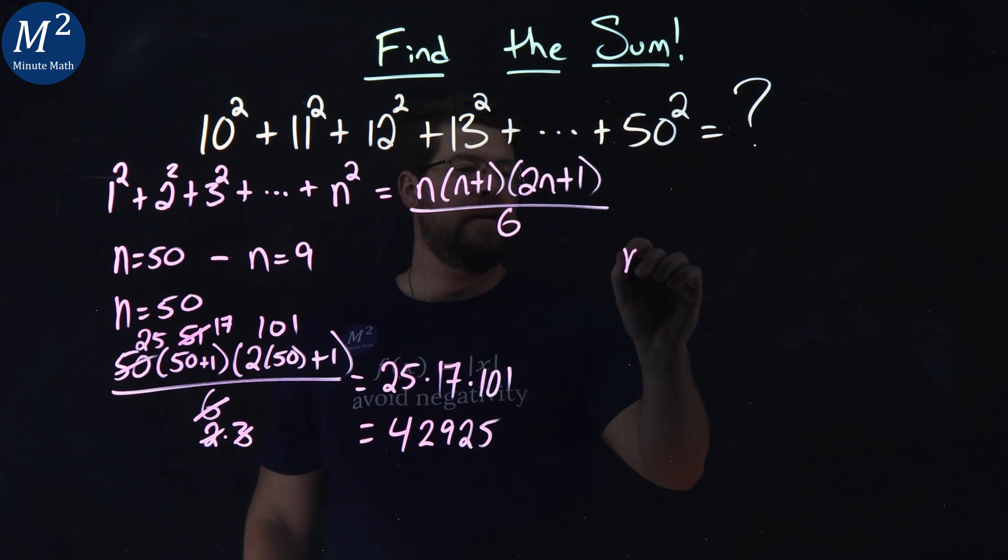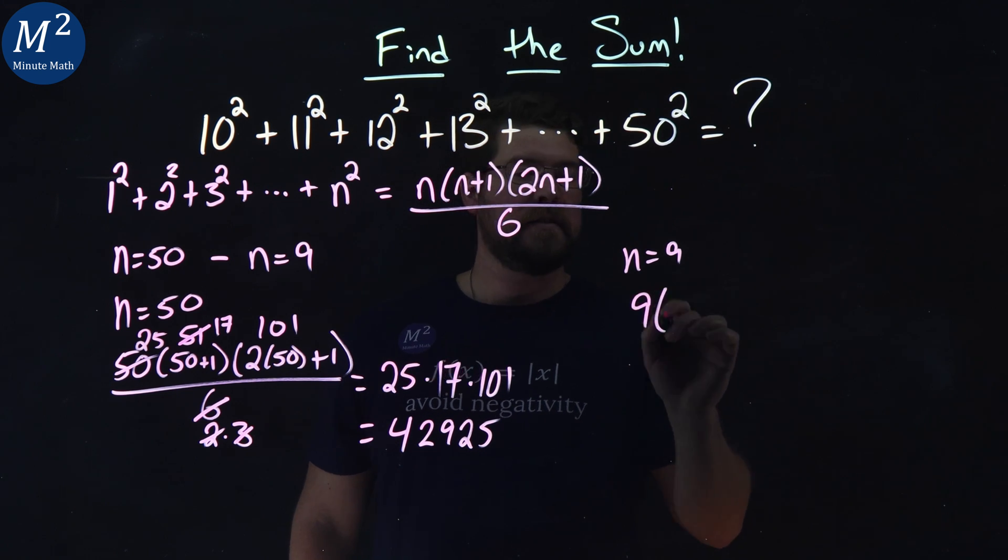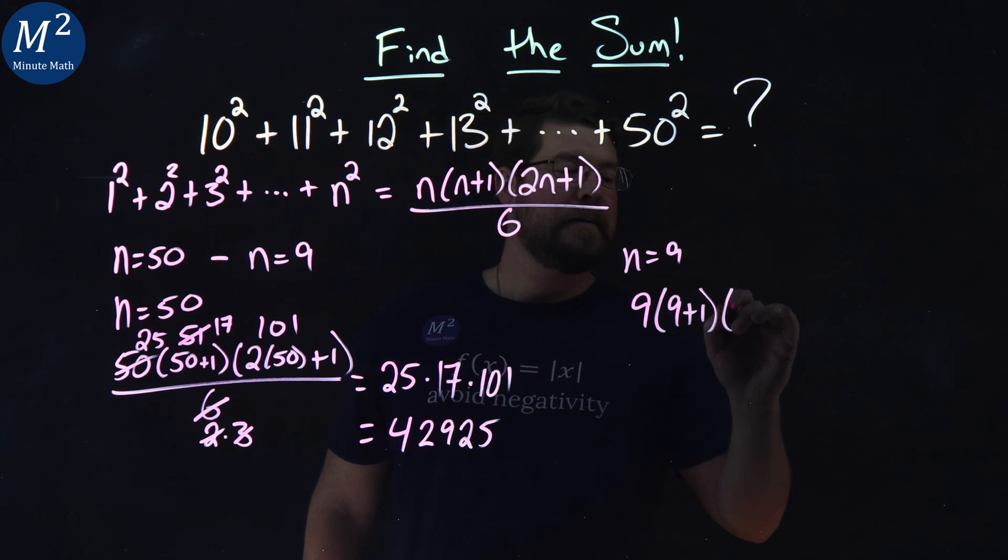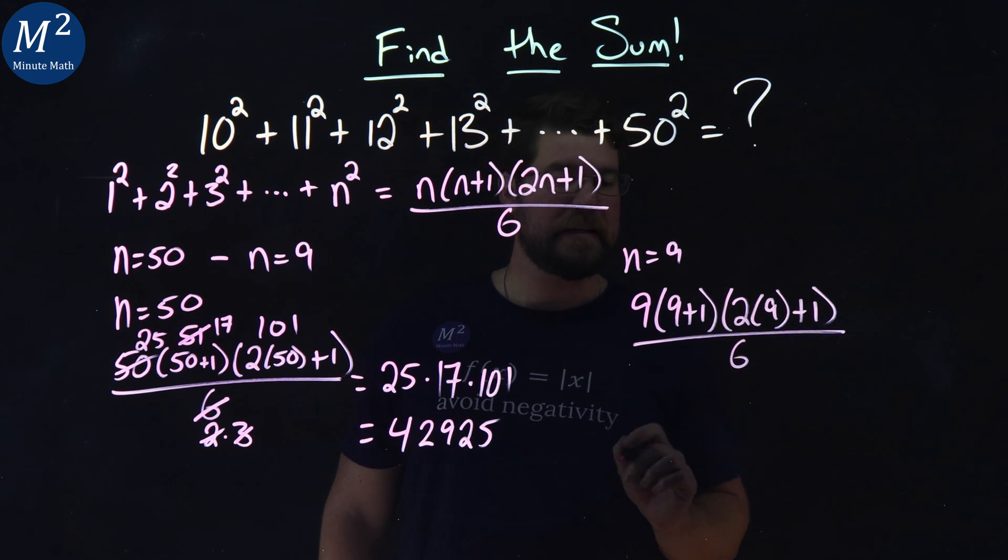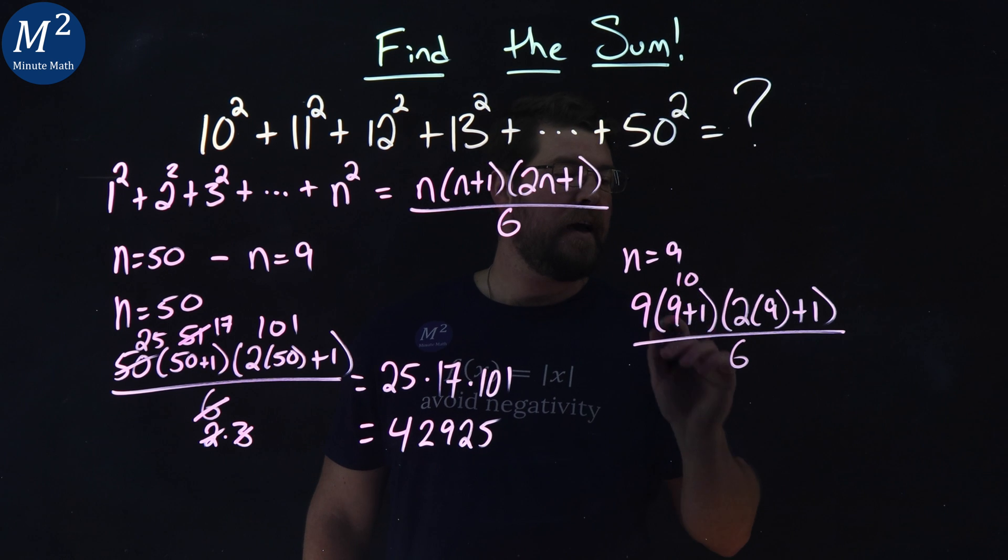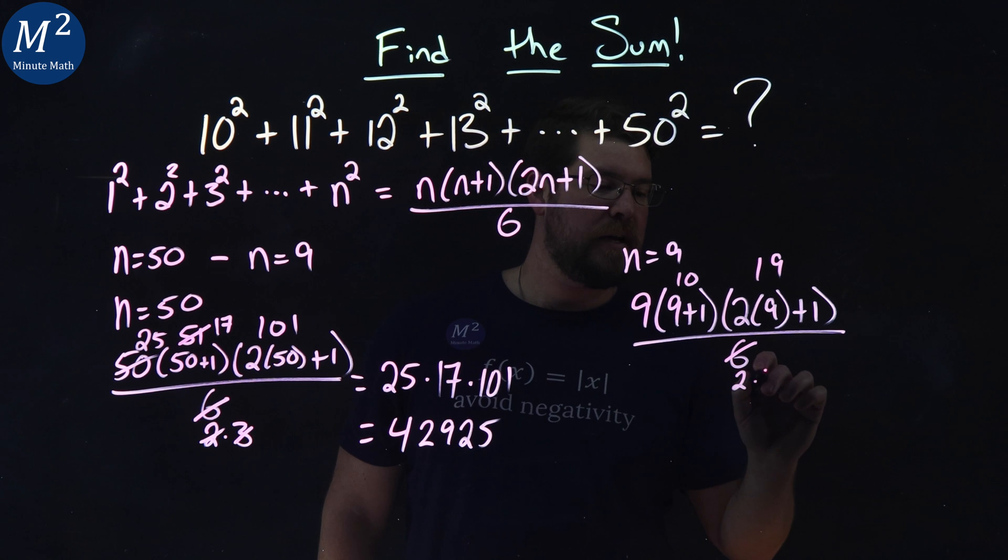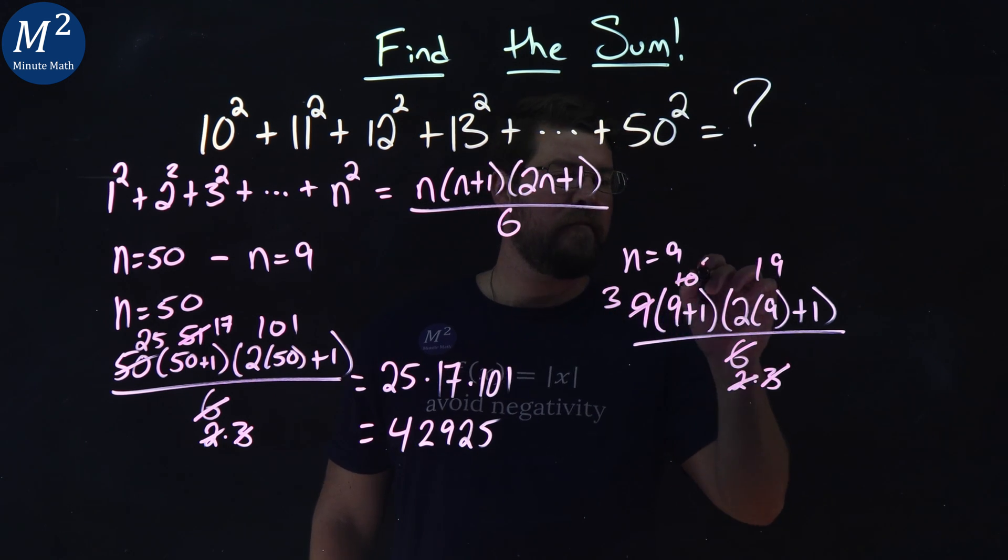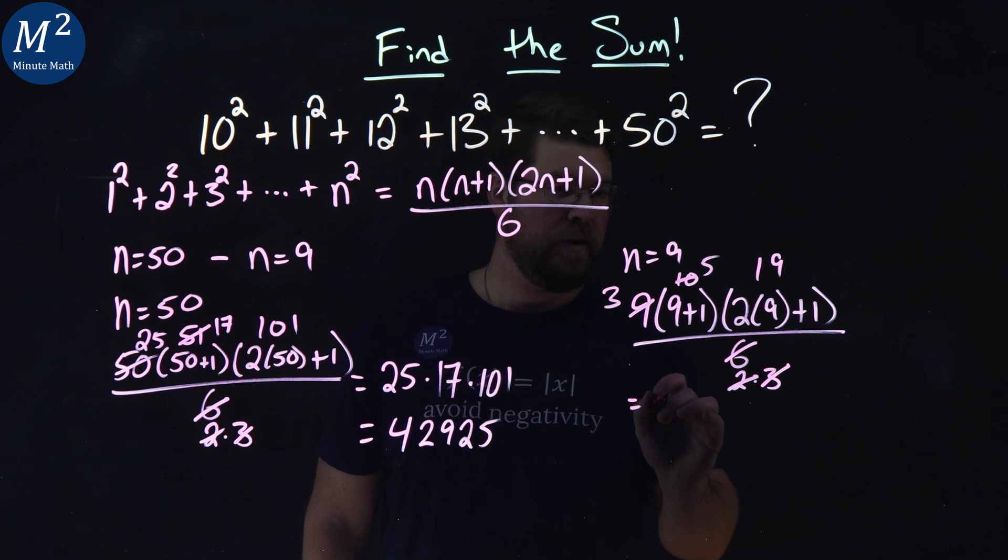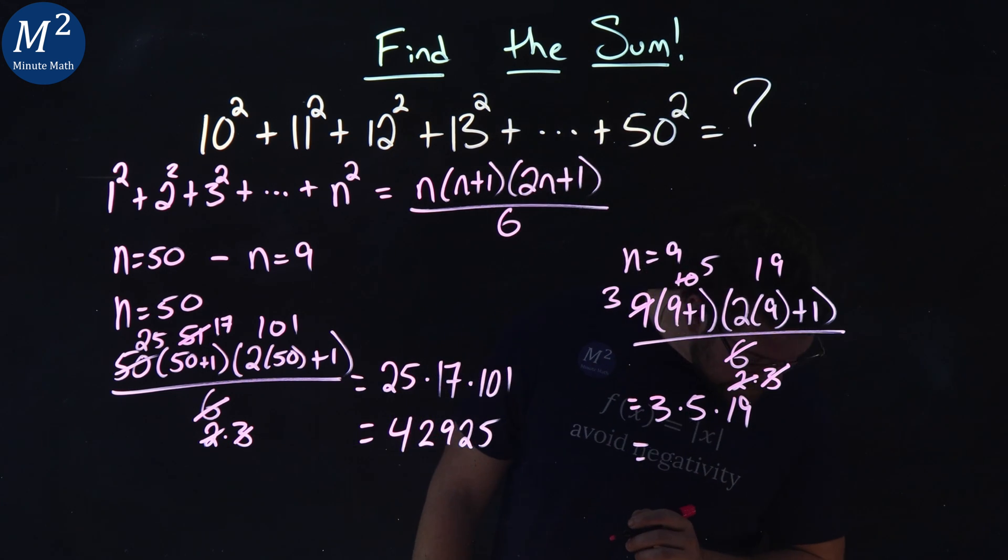Now let's deal with it when n equals 9. Same idea. We have 9 times, using our formula, (9+1) times (2×9+1) all over 6. 9+1 is 10. 2×9 is 18+1 is 19. 6 is 2 times 3. 3 goes into 9 3 times, and 2 goes into 10 5 times. And so we have here is 3 times 5 times 19, which comes out to be 285.